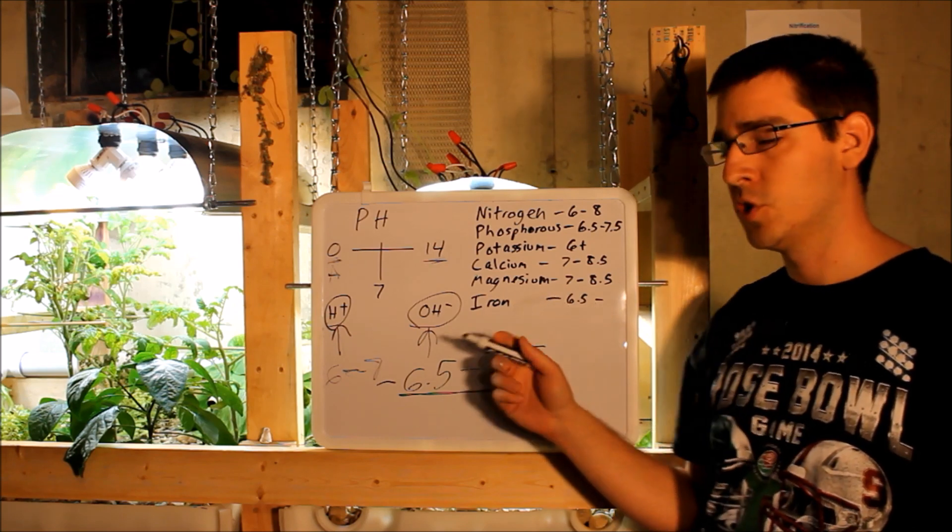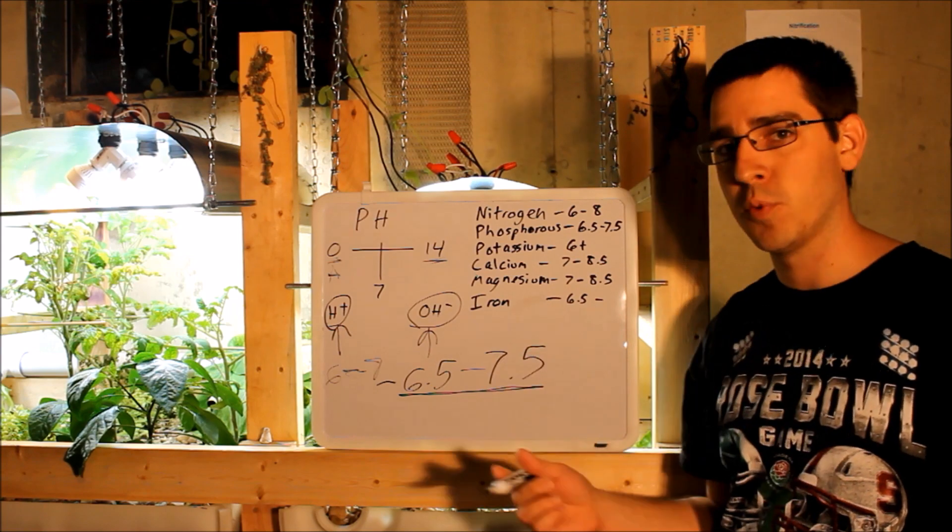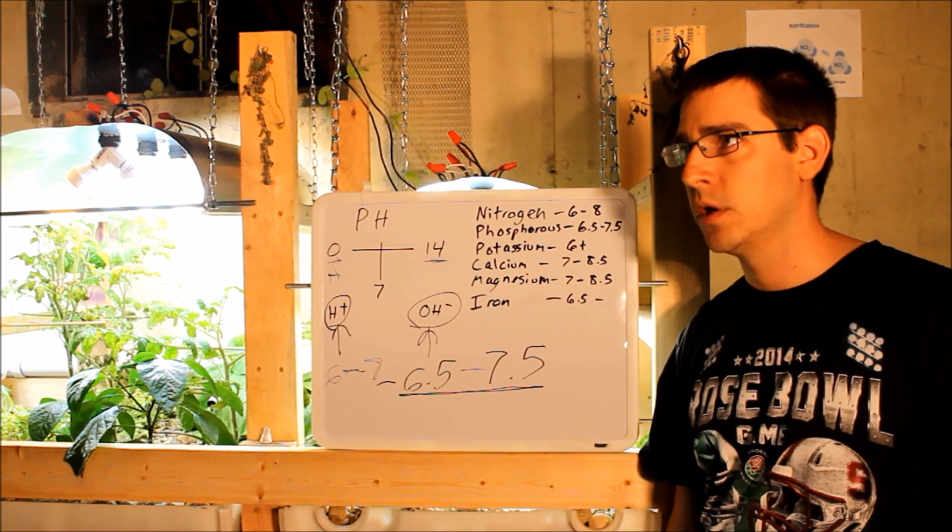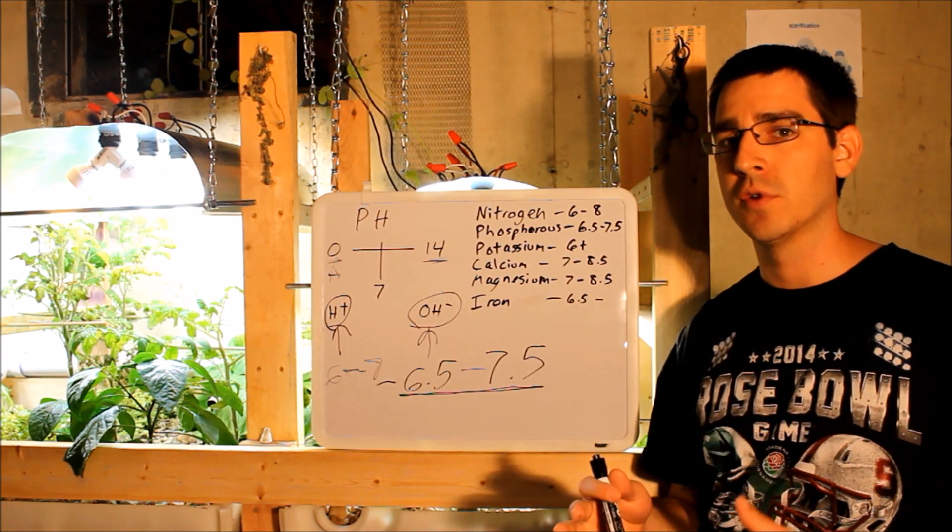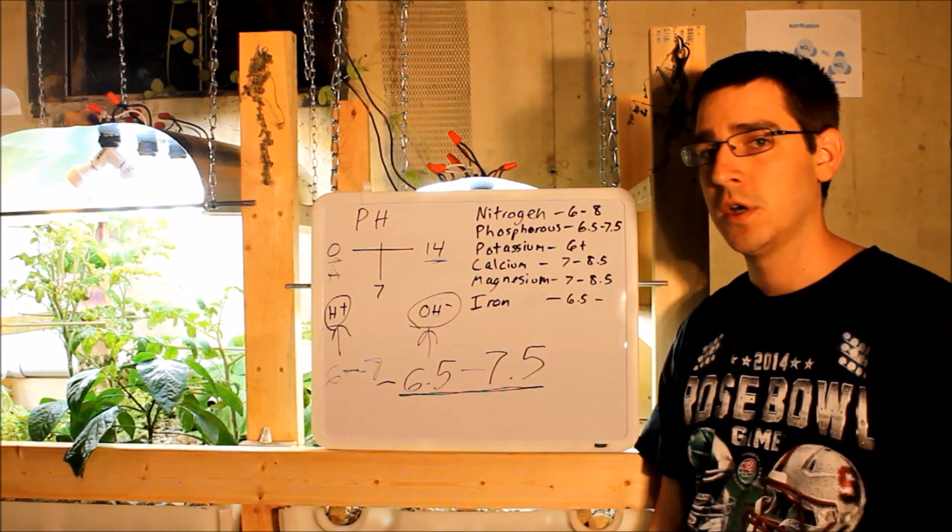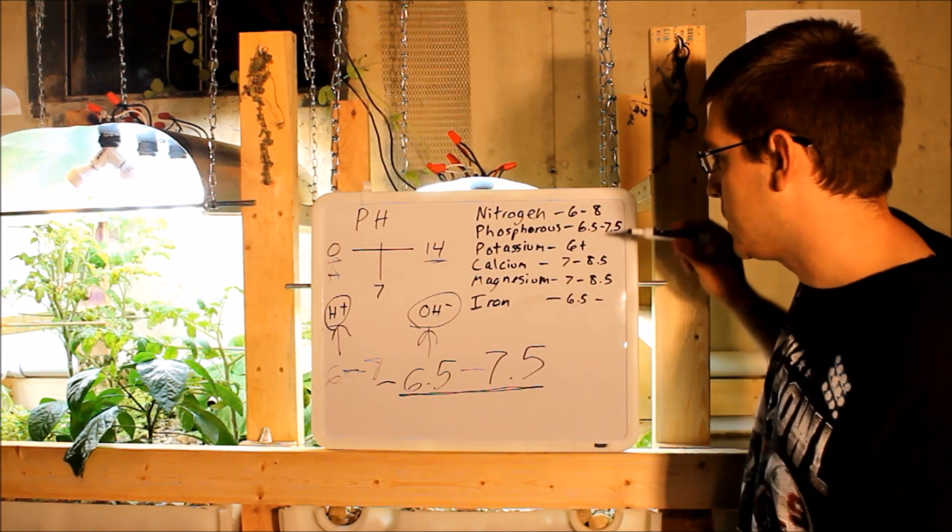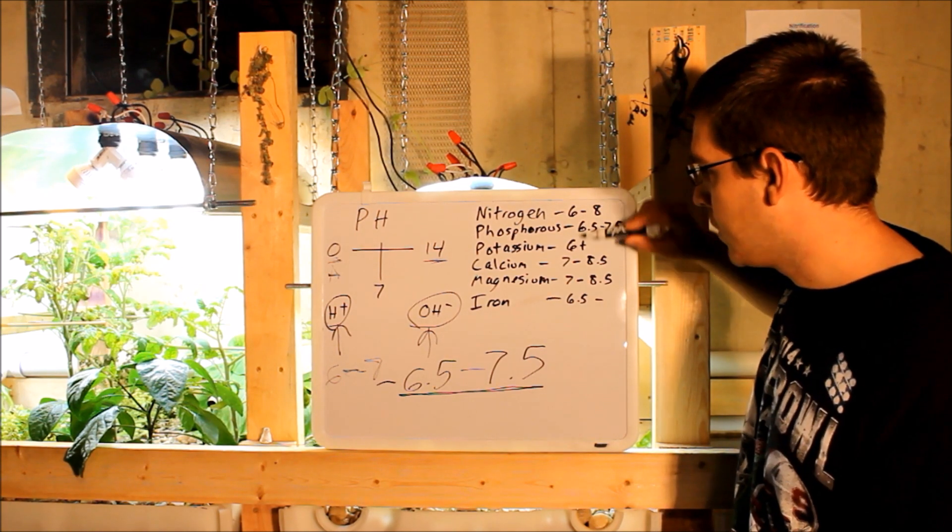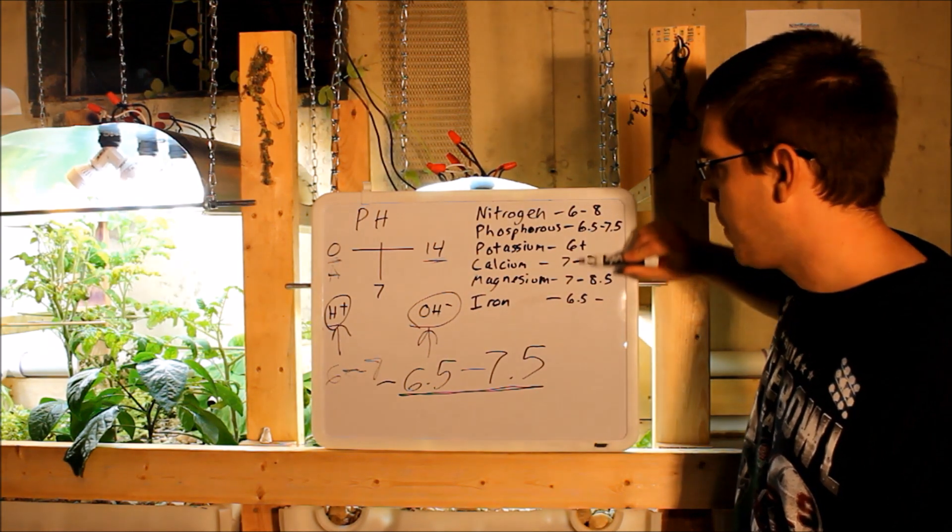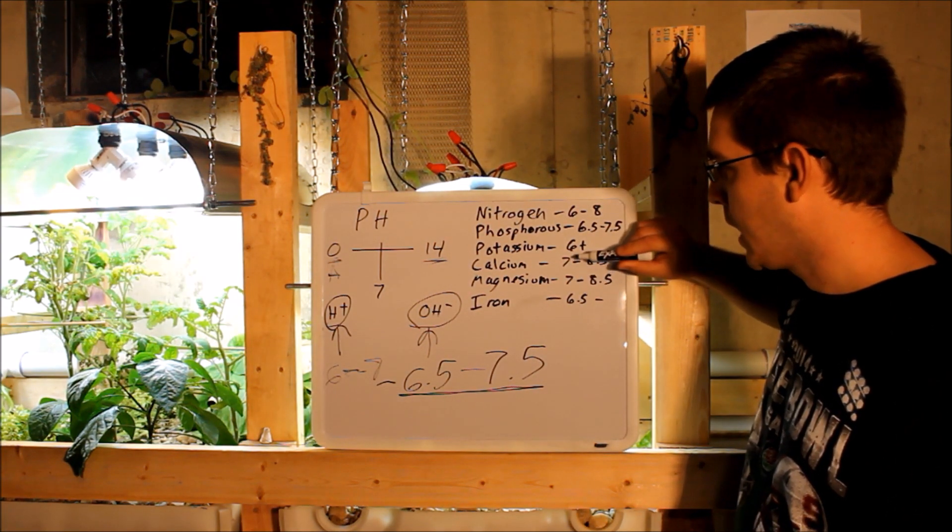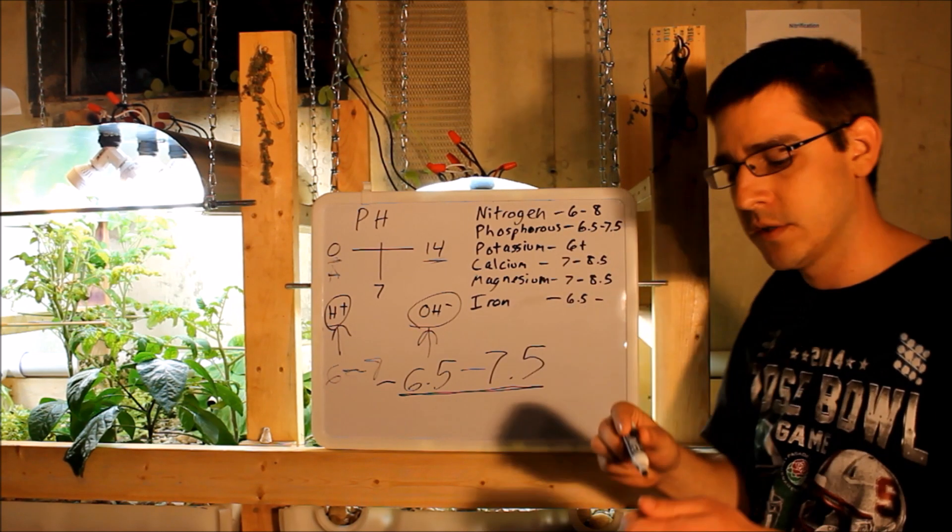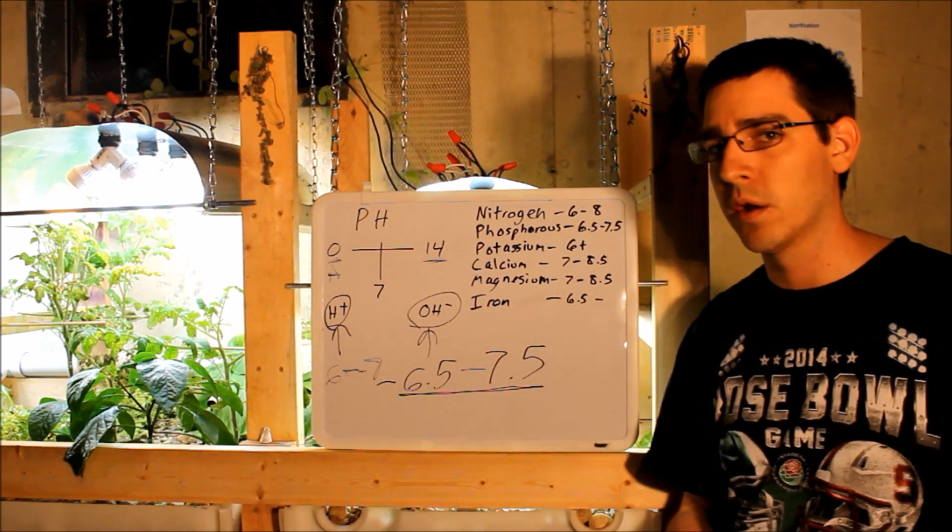And iron, this is the tricky one because iron actually likes it less than 6.5. There are different iron ions, Fe3+ and other iron ions that interact differently. But in general, iron will be more available in your system at a lower pH. And so that's where you have to find that sweet spot. If you're at 7 or between 6.5 and 7, actually you have the best of everything. Right around 7, you've got the most efficient of everything and then iron would be a little less efficiently absorbed, but still well enough for your plants to grow.